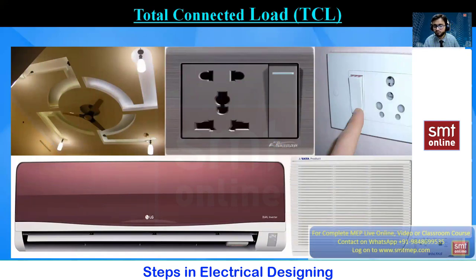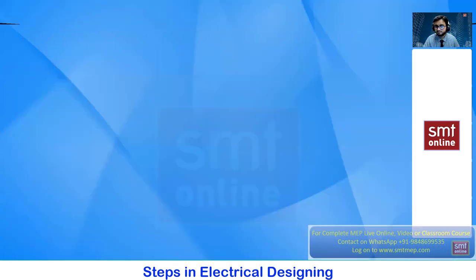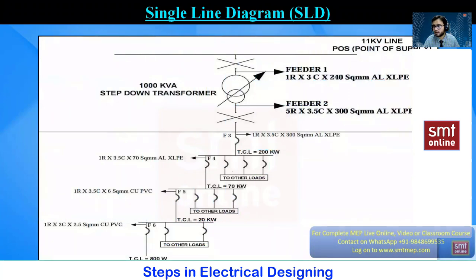The total connected load for any project — whether small villas, residential, or commercial buildings — includes lights, fans, electronic gadgets, electrical appliances requiring sockets (power and normal), and air conditioning (split or window type). For commercial projects, when you add mechanical loads, plumbing, and firefighting loads, that defines the complete total connected load, based on which we propose the single line diagram.